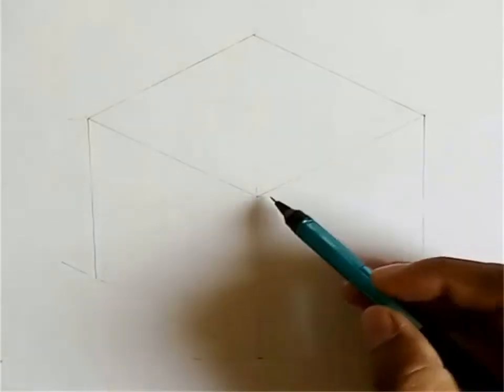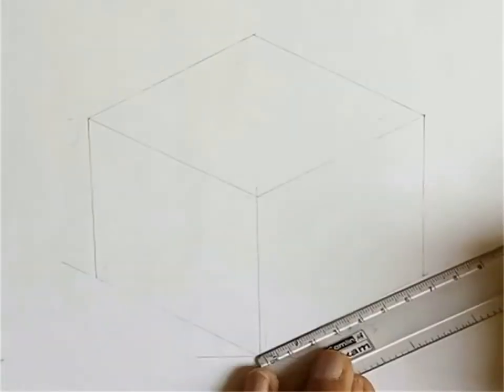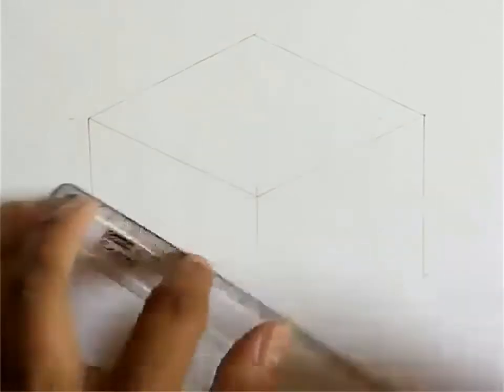Each surface has four corner points and four sides. Let us mark midpoints of each side of right vertical surface.